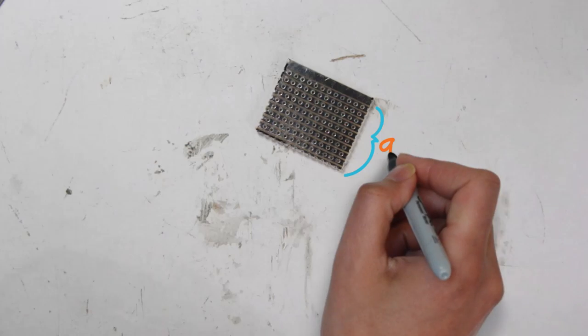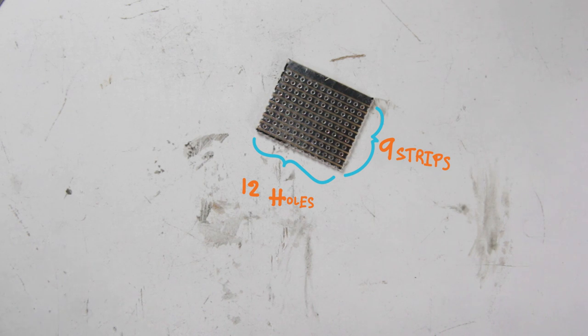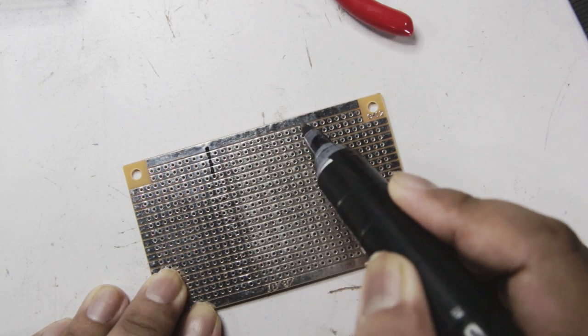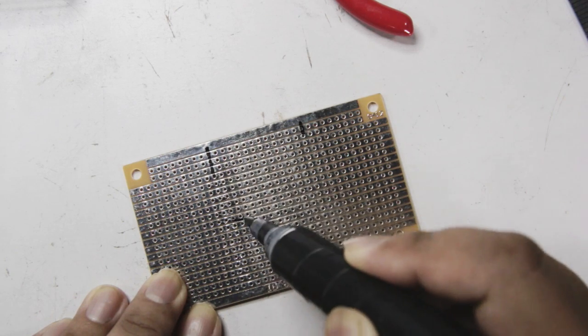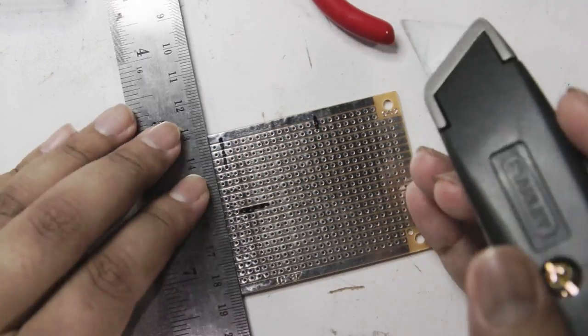We'll start by cutting the stripboard into a smaller piece, a piece of 9 strips, 12 holes a strip. It is a good idea to use a marker to mark where you want to cut before you cut it. I find it easier to cut through the holes, rather than cutting between the holes.